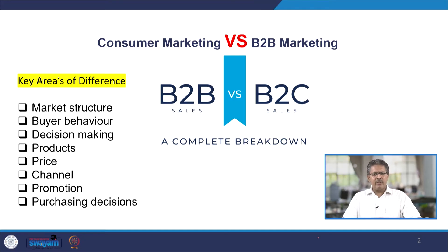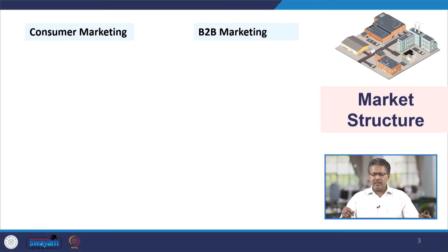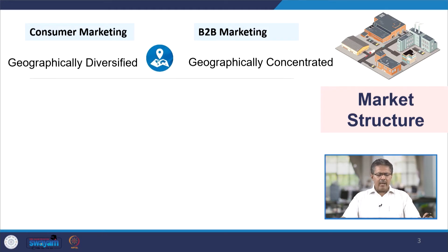These are the key areas which help in differentiating these two markets. Let us go through them one by one. In terms of market structure — as you can see in this diagram showing industries close to each other — consumer markets are geographically diversified; they are spread across the whole nation. But in B2B marketing, most markets are geographically concentrated.